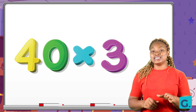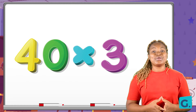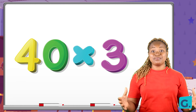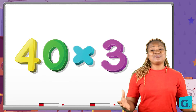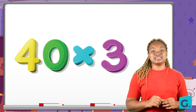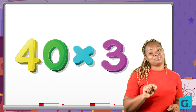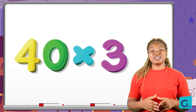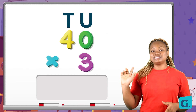Now let us solve this one together. We have forty times three. Remember, we can add forty to itself three times — that would be forty plus forty plus forty — but that would take so much time. So let us arrange these numbers according to their place values and multiply starting with the units. If you do that correctly, it should look like this: your tens and units with forty arranged on top and the units number below.